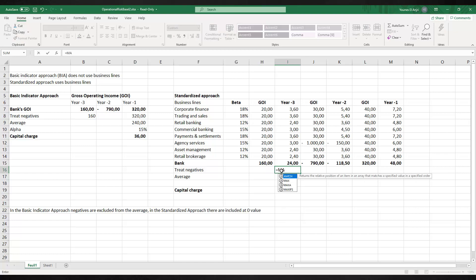The Excel function max is helpful here. This value picks the greater of the values, the year's capital charge or zero. Applying these rules gets us a capital charge of 24. The difference with the basic indicator approach, where we had a capital charge of 36, can be explained by the more favorable treatment of losses in the standardized approach.